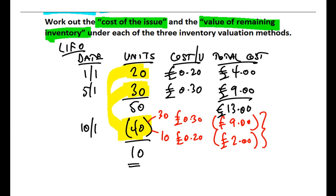So what's the total cost of the 40 bananas we're selling? Well, there are 30 bananas from the 5th at a total cost of £9, 10 from the 1st at a total cost of £2, which gives me £11 as the total cost of the issue.